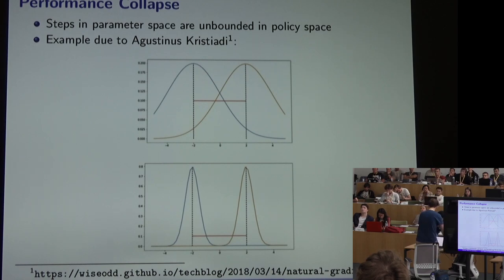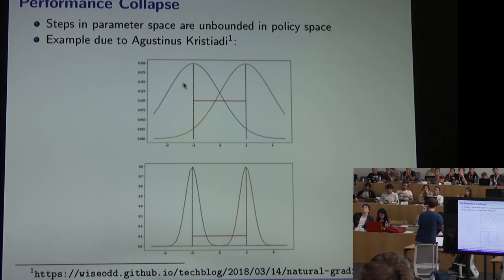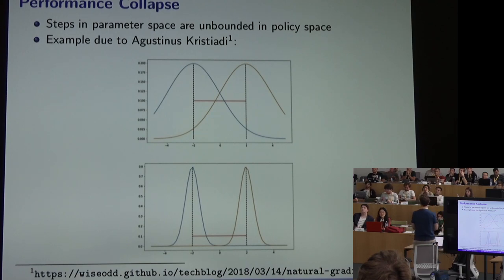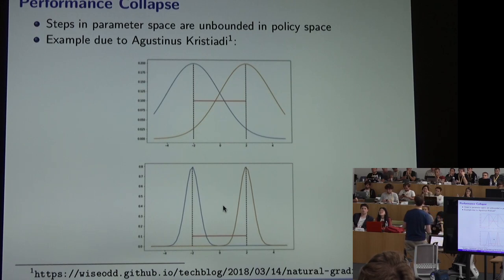A small change in parameter space could yield a huge change in policy distributions. For example, consider a Gaussian policy parameterized only by its mean with fixed variance. The same step size in parameter space applied to a narrow Gaussian produces a much larger KL divergence than the same step applied to a wide Gaussian. Similarly, for a sigmoid-parameterized policy, moving from theta=4 to theta=2 yields only a small policy change, while moving from theta=2 to theta=0 can cause a dramatic change because the sigmoid is steep there.